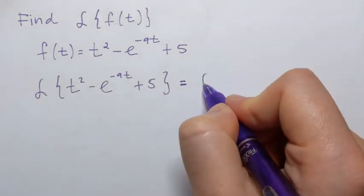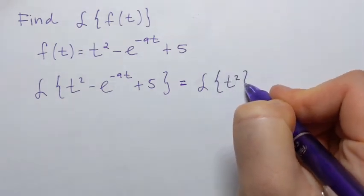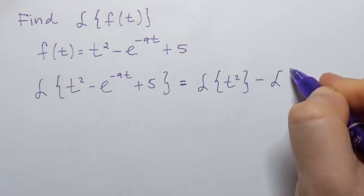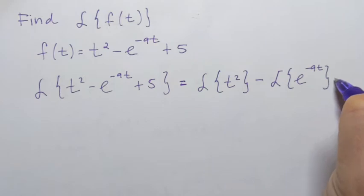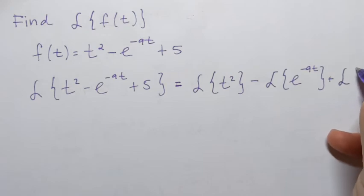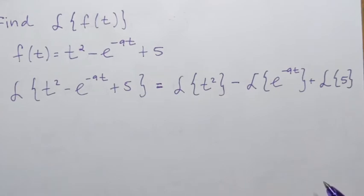it's going to be the same as finding Laplace transform of each term and then adding or subtracting the results. So that means that if we take Laplace transform of t squared, subtract the Laplace transform of e to the power negative 9t, and add the Laplace transform of a constant function 5, then the result will be the same. So that's what's called linear operator. Differentiation and integration are also linear operators.